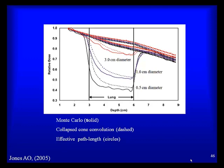A figure from Jones demonstrates that in a stylized water-lung-water phantom, the difference between Monte Carlo, convolutional superposition, and pencil beam is dramatic — significant as a function of beam aperture at 3 cm, 1 cm, and 0.5 cm. The pencil beams almost fail to account for the presence of the lung heterogeneity, whereas convolution superposition and Monte Carlo do a good job accounting for the heterogeneity.